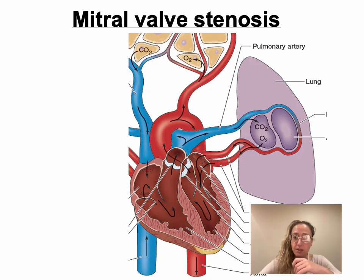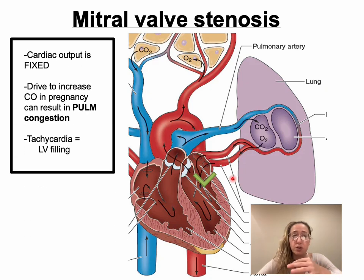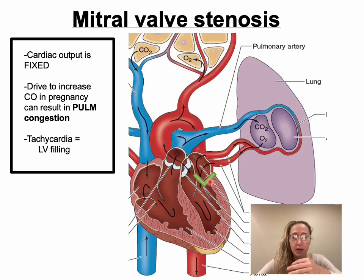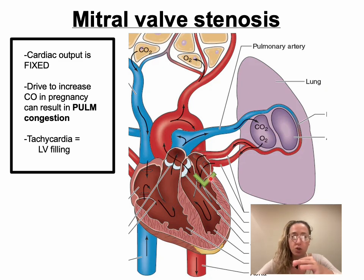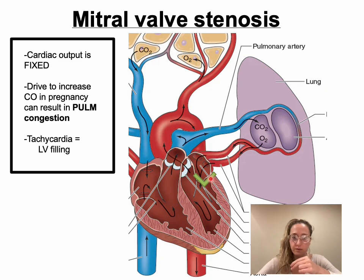Mitral valve stenosis is the most common acquired lesion in pregnancy. I've made little green arrows for where these stenotic valves are. The cardiac output in mitral valve stenosis is fixed due to that stenotic valve, so blood can't get out of the left atrium fast enough — it accumulates and backs up into the lungs. Twenty-five percent of women who are pregnant with mitral valve stenosis present in heart failure for the first time during pregnancy.